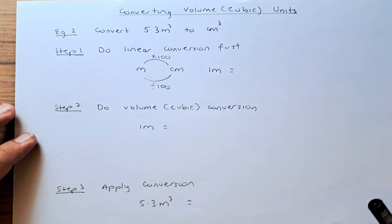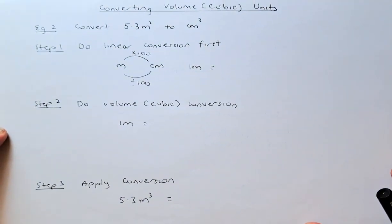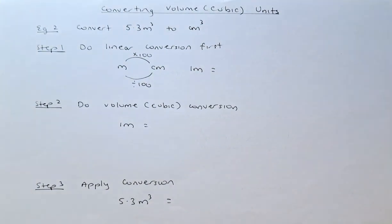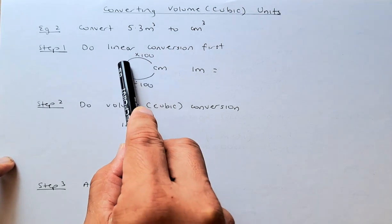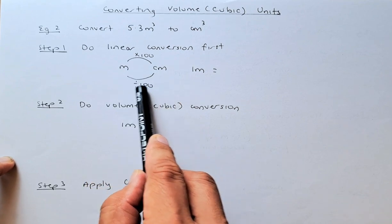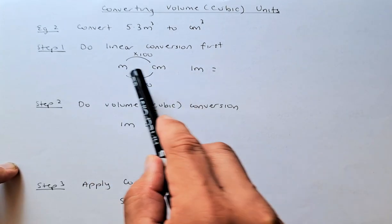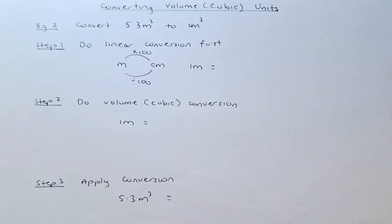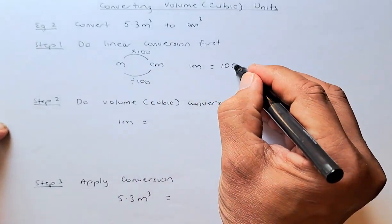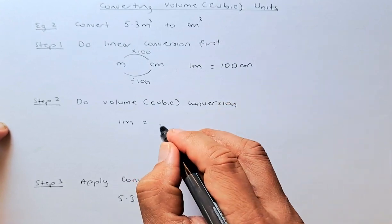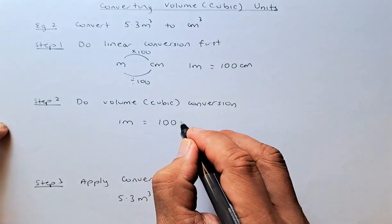Now we're going to do a second example, which is a little bit harder with bigger numbers. We are going to convert 5.3 meter cube to centimeter cube. To do that, again you need to do a linear conversion first. Meter to centimeter you multiply by 100; centimeter to meter you divide by 100. So 1 meter converted to centimeter: multiply 1 by 100 gives you 100 centimeter. So 1 meter is equivalent to 100 centimeter.